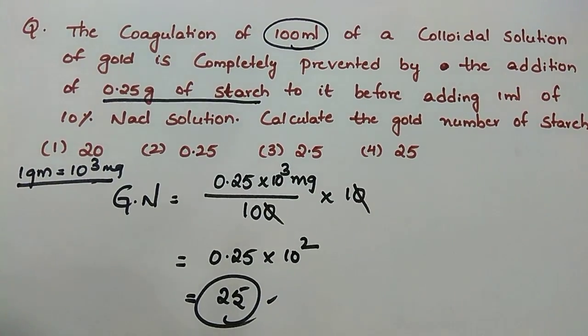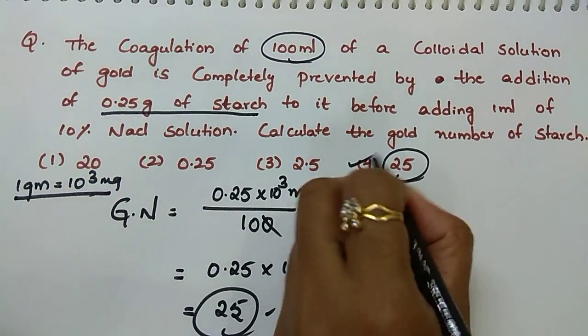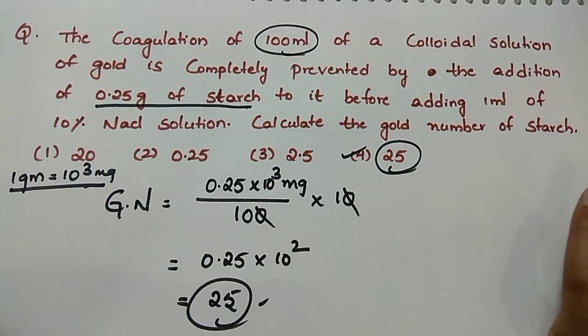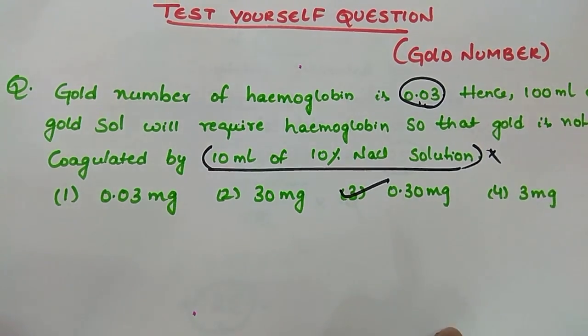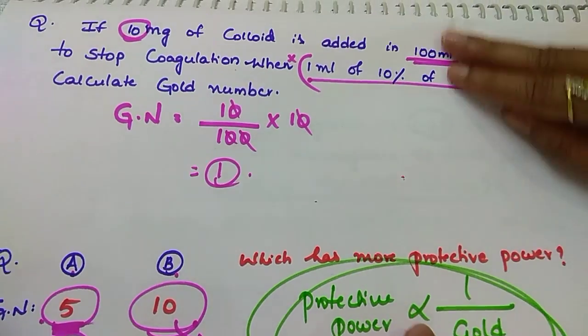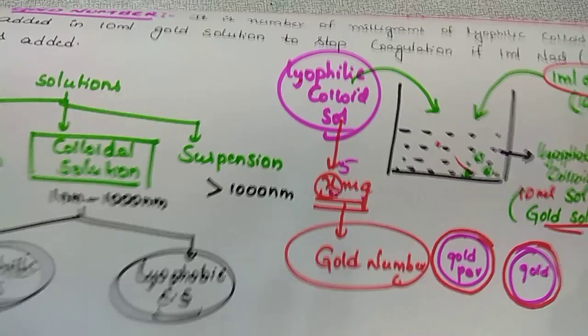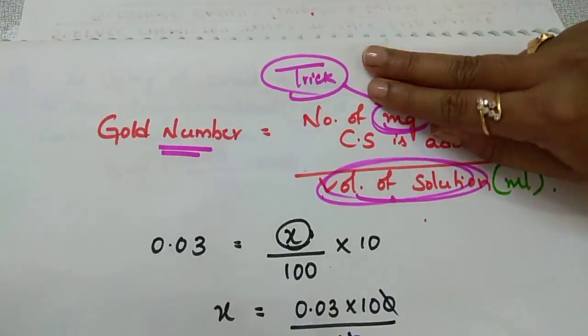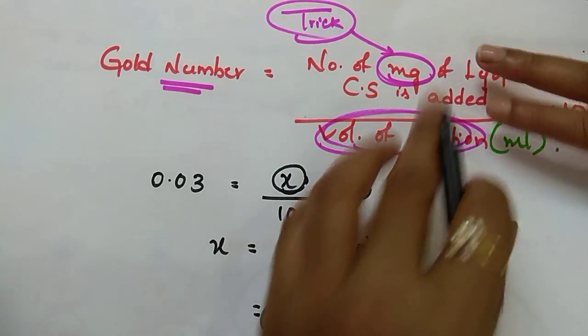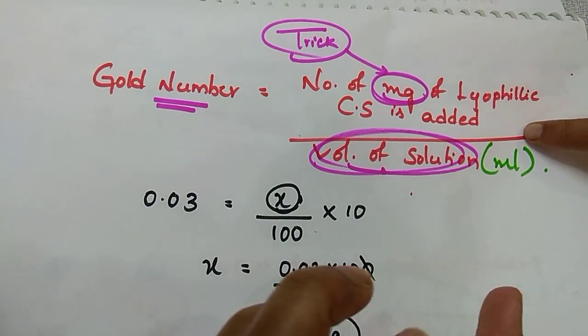Understand, that's it. Simple thing is you have to understand what exactly the gold number is, which I discussed. Please don't solve the questions without listening to the explanation I gave. Follow this simple trick - milligrams of colloidal solution, lyophilic it should be, and volume should be in ml.